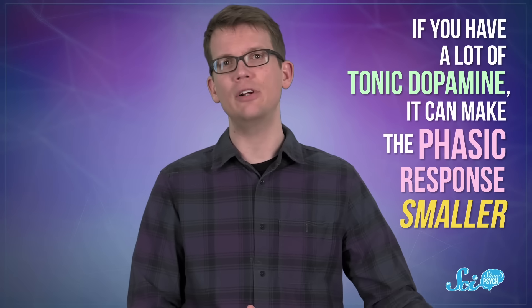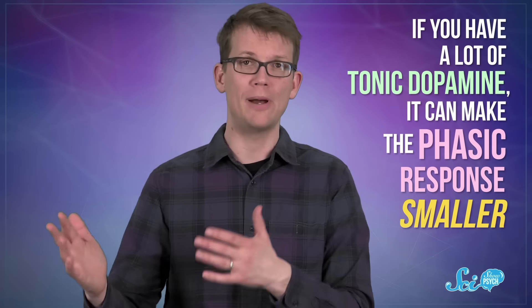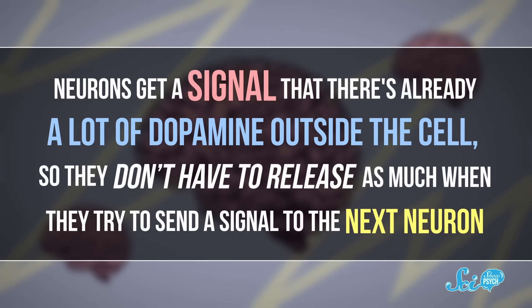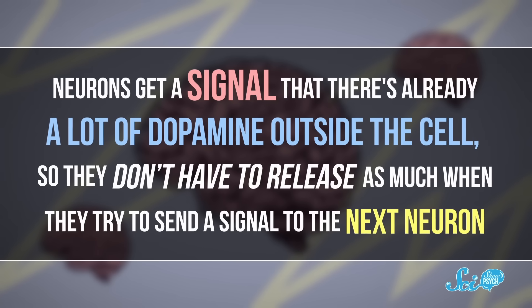Both kinds of dopamine levels are important because they affect each other. If you have a lot of tonic dopamine, for example, it can make the phasic response smaller. Neurons get a signal that there's already a lot of dopamine outside the cell, so they don't have to release as much when they try to send a signal to the next neuron.